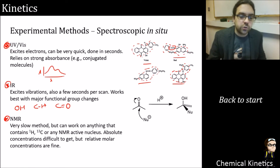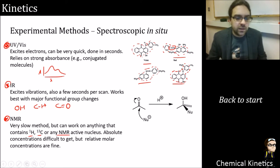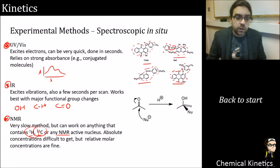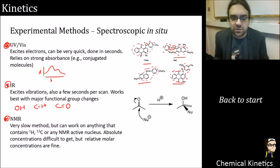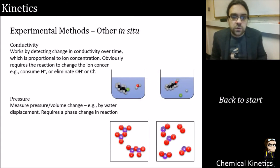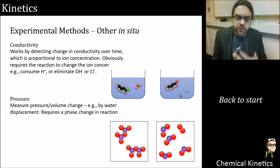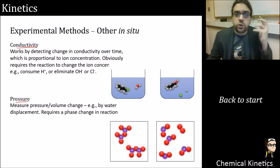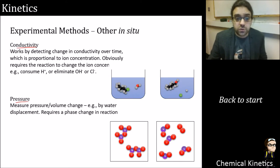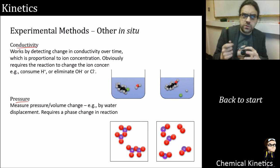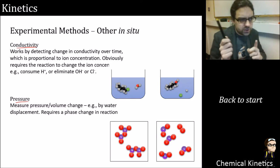An NMR scan takes at least a minute, so that's one minute per data point. You need 10 or 15 data points for a decent trace, so if your reaction is faster than about 15 minutes, don't bother. But you don't need a UV-active molecule or a major change in functional group — you can follow almost anything with an NMR-active isotope. It's slow, but if you have the material and time on the spectrometer it's a really good bet.